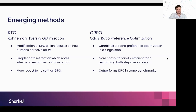Looking at more recent methods we've been researching: first, KTO, inspired by prospect theory in economics and how humans perceive utility. For instruction-response pairs, we understand if a response is good or bad using a binary label, and KTO uses that to optimize the model. The authors found it is more robust to label noise than DPO. ORPO — odds ratio preference optimization — is a different technique. A typical pipeline involves supervised fine-tuning and then separately preference optimization, but the authors of ORPO found it much more computationally efficient to combine these steps into a single loss function with two components, outperforming DPO on some benchmarks.